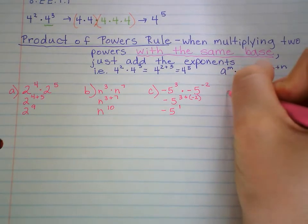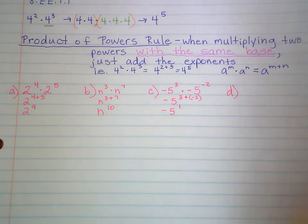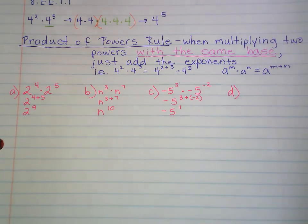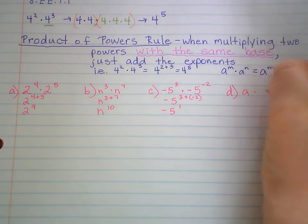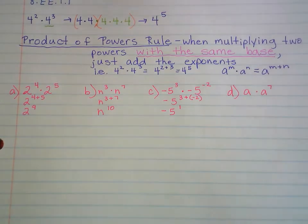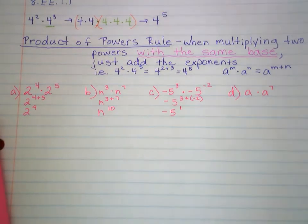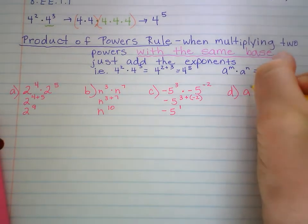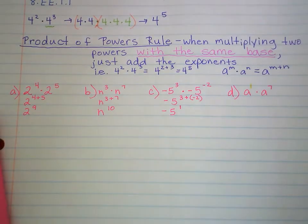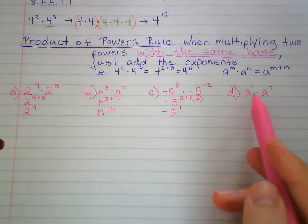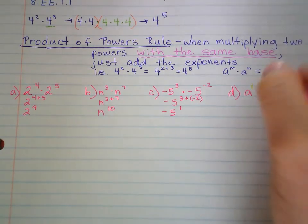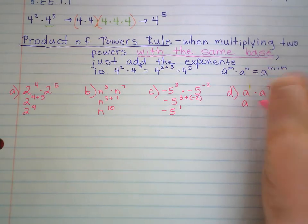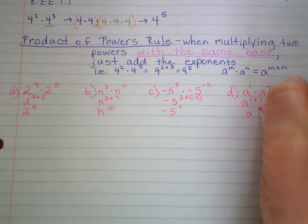Let's do a little bit harder examples — the rule doesn't change though, you just add the exponents. So let's say we have a times a to the 7th. They have the same base and we're multiplying the two powers. This has an invisible exponent of 1 — you have to know that, it's not 0, it's 1. It's a to the 1st power. So a to the 1st plus 7th equals a to the 8th.